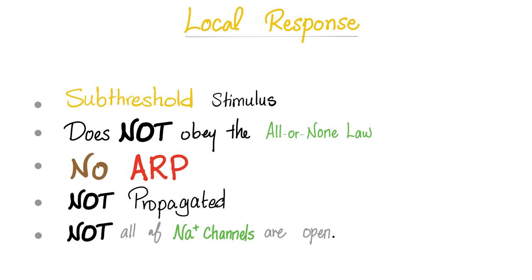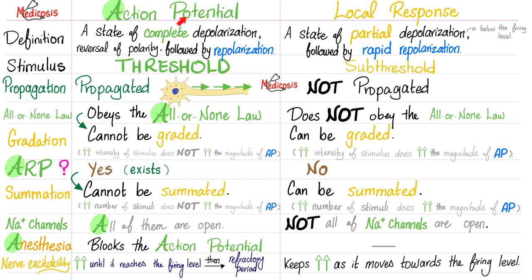Now let's talk about local response. When you give me a subthreshold stimulus, I will not give you an action potential — I'll give you a local response. Does local response obey the all-or-none law? No. Does it have an absolute refractory period? No. Is it propagated? No. Has it opened all sodium channels like the action potential? No. This is a very important comparison: action potential versus local response.